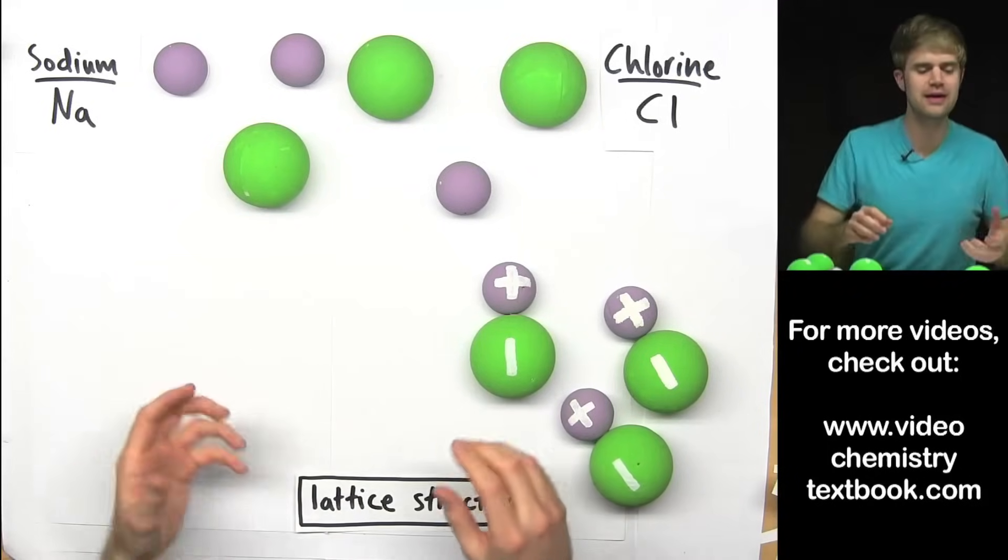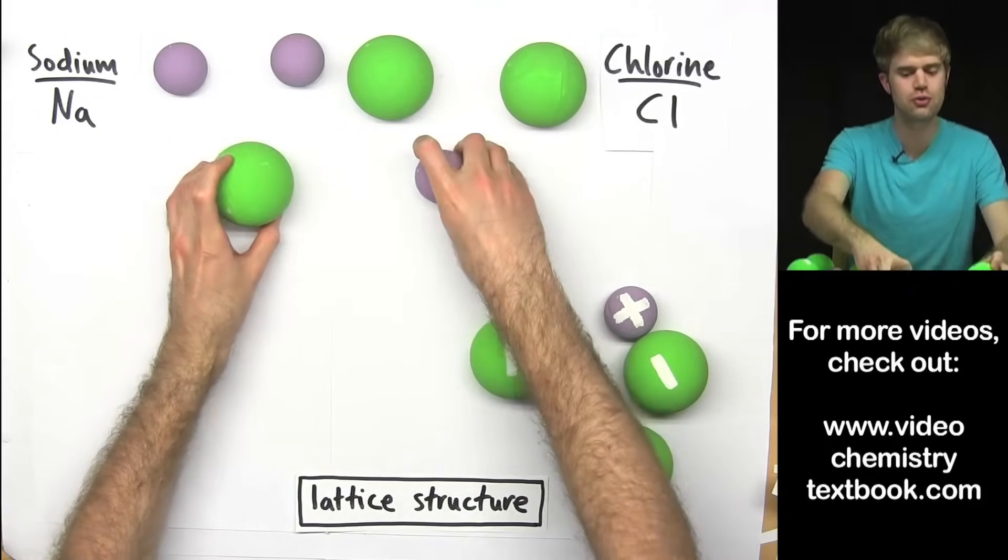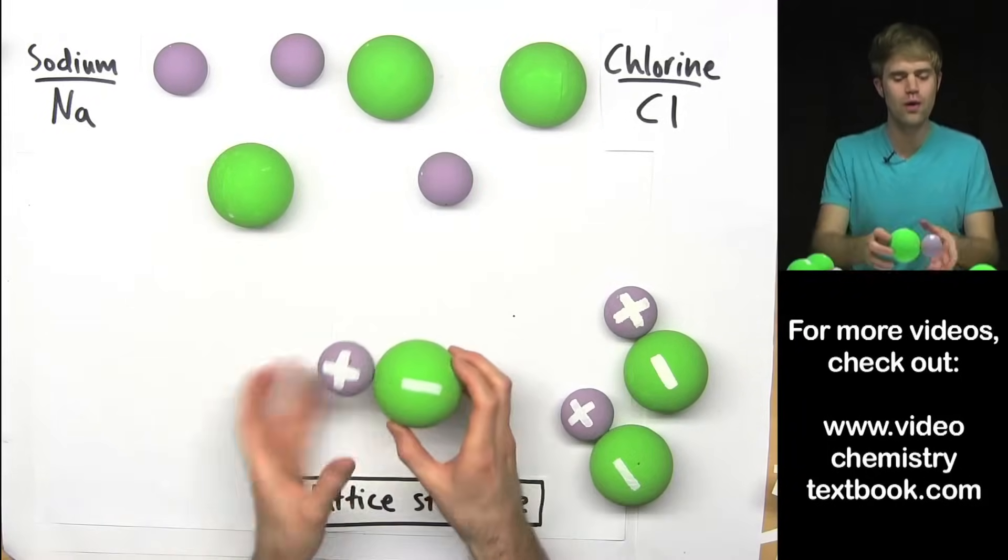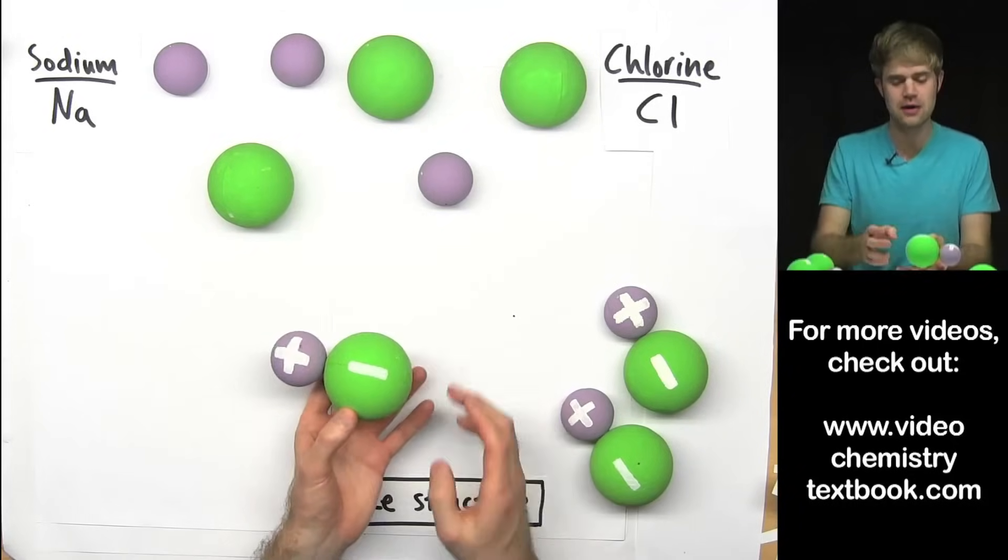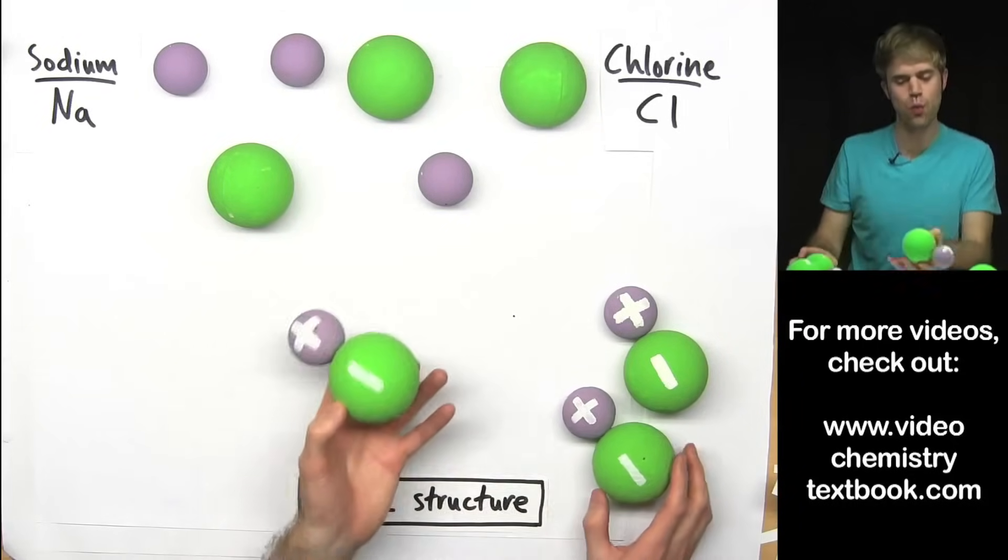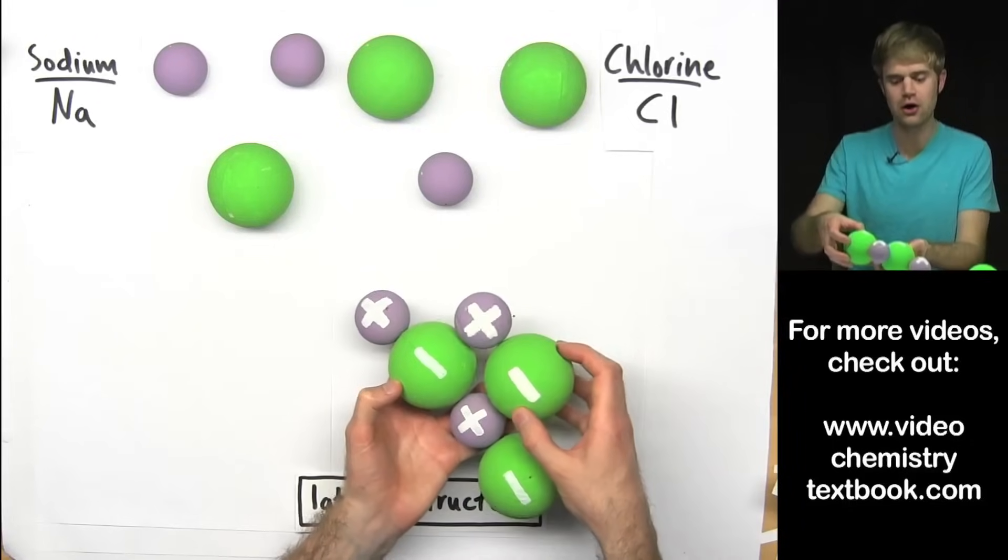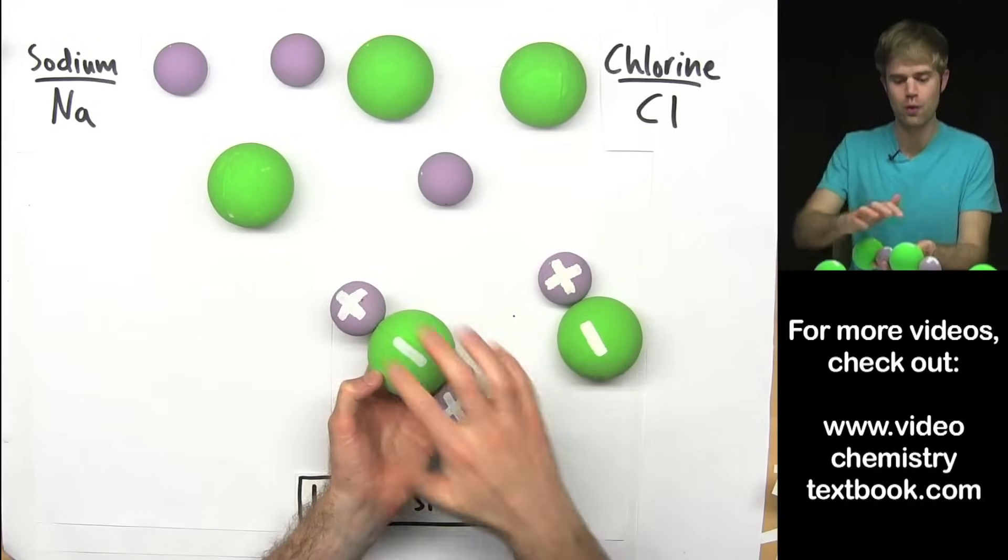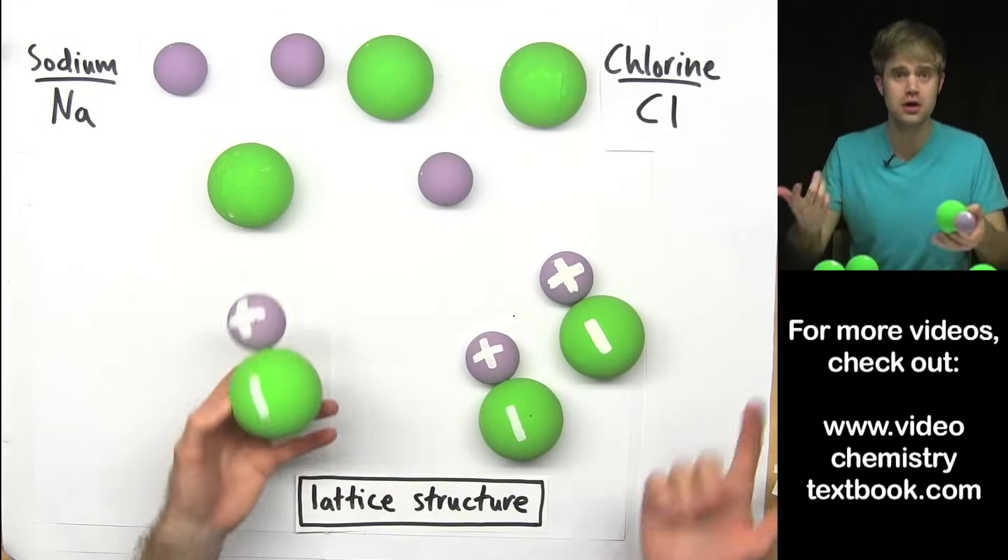Now as we go forward, we'll probably continue focusing on just two atoms at a time. But whenever you see a shape like this, keep in mind that it's just one part of a bigger lattice structure that you get when a whole bunch of these different units come together.